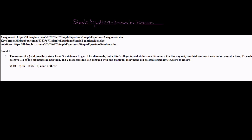Let's see what the problem says. The owner of a local jewelry store hired 3 watchmen to guard his diamonds. But a thief still got in and stole some diamonds. On the way out, the thief met each watchman one at a time. To each he gave half of the diamonds he had then, and 2 more besides. He escaped with 1 diamond. How many did he steal originally? We have to find how many diamonds the thief stole to start with, that is before giving any diamonds to the watchmen.